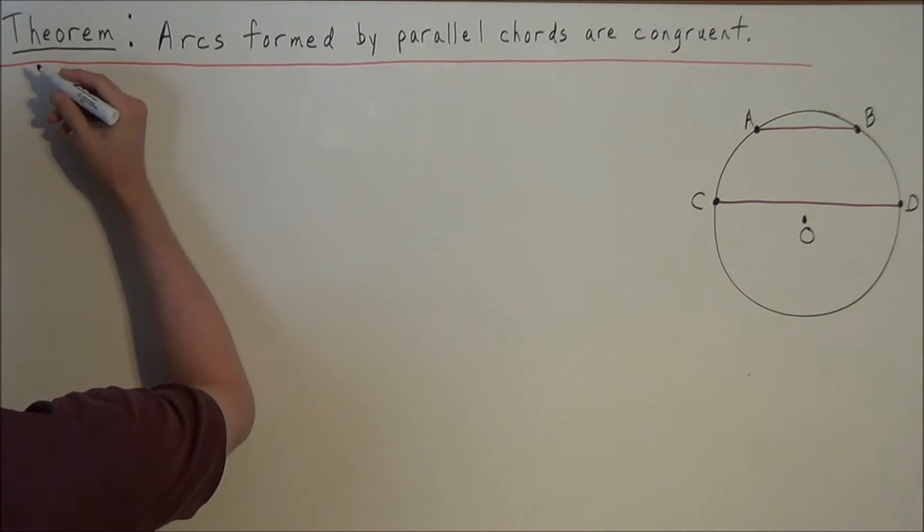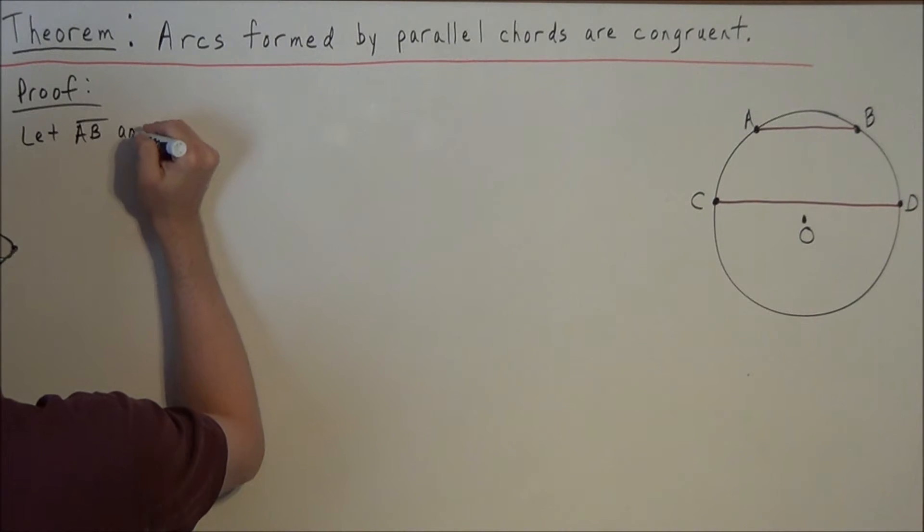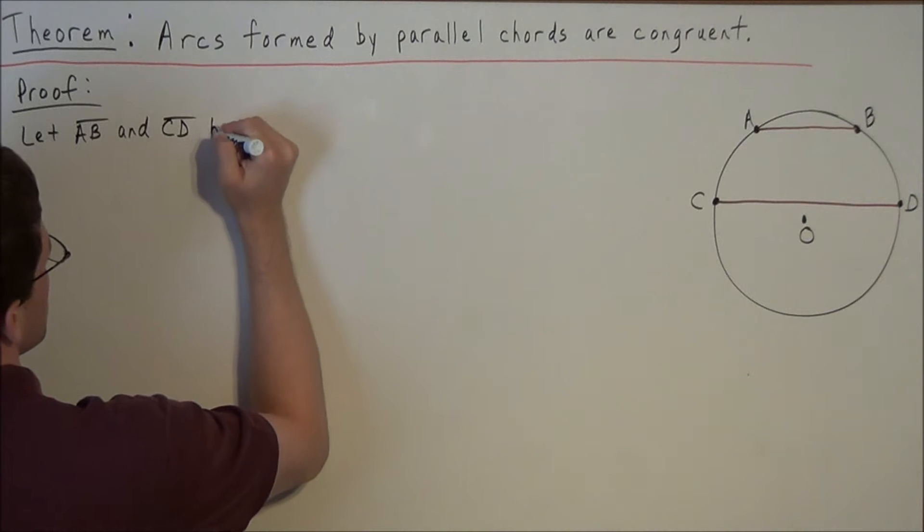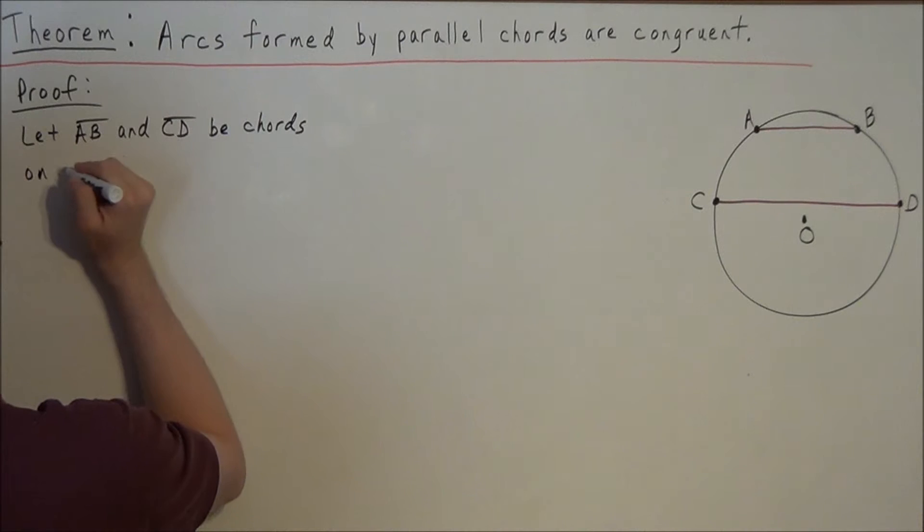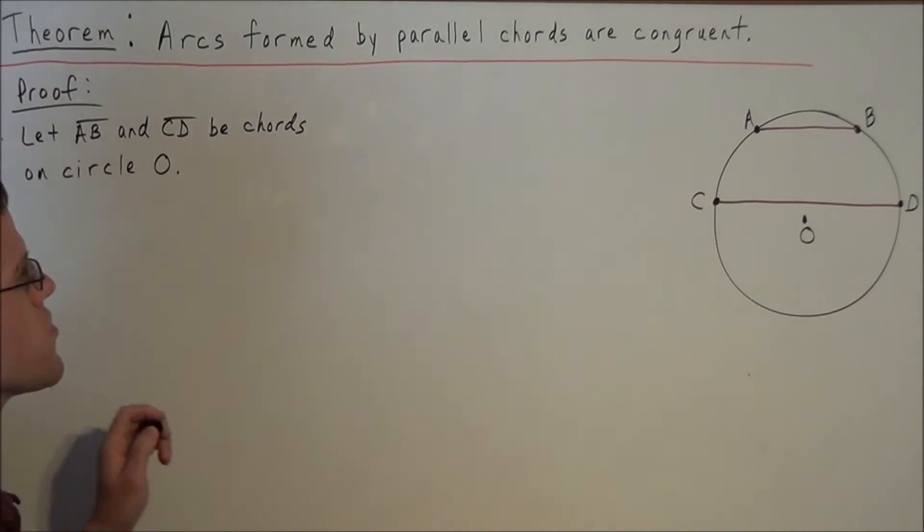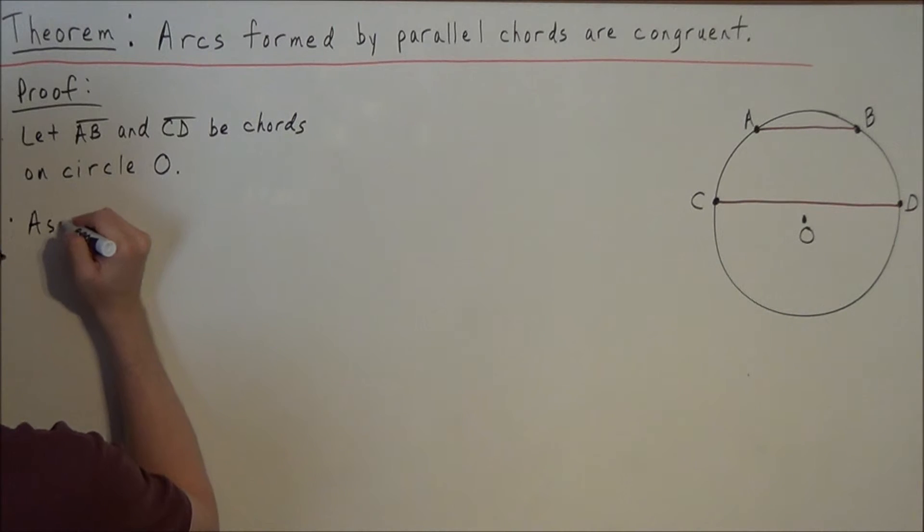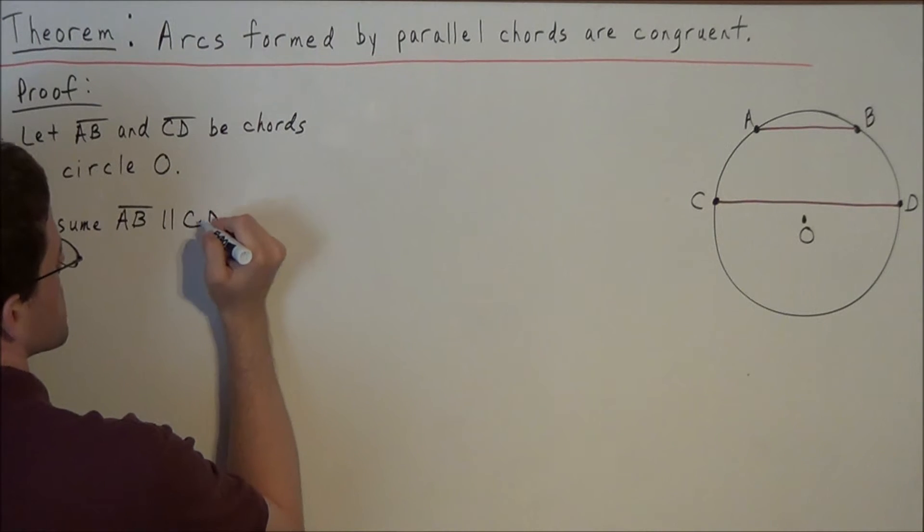So we can start this proof by assuming that we have parallel chords on some circle. We'll say, let line segment AB and line segment CD be chords on circle O. This first line just introduces the diagram into our proof. But now we need to assume that segment AB is parallel to segment CD.